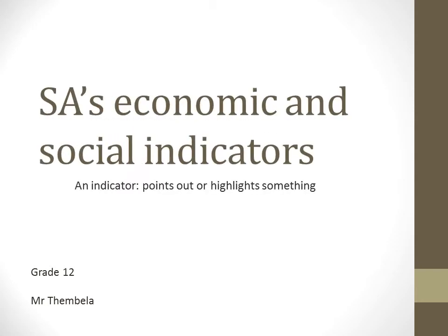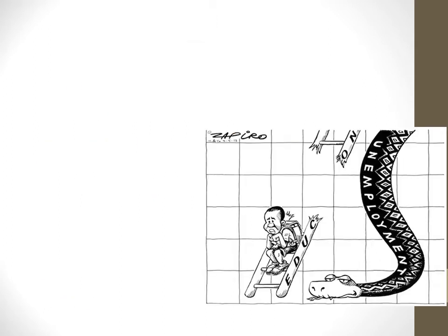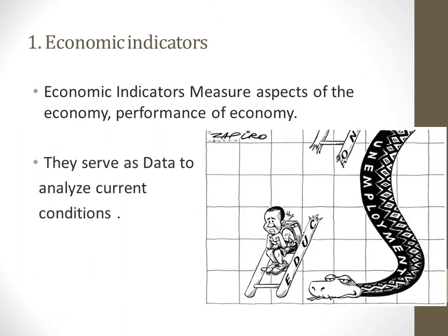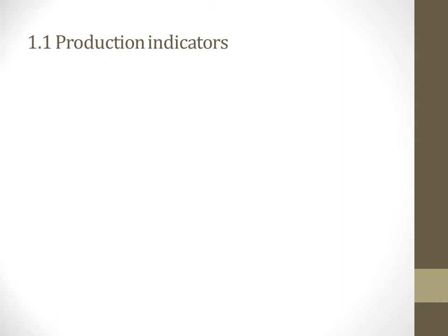Welcome to this lesson. We're going to be looking at economic and social indicators. An indicator basically points out or highlights something. Economic indicators measure aspects of the economy — the performance of the economy. An indicator measures aspects of how the economy is performing at a specific time and serves as data to analyze current conditions.